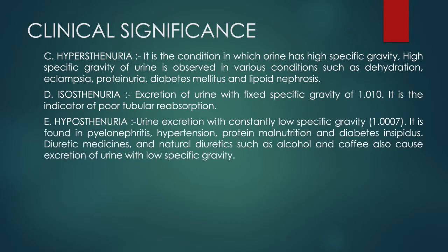Hyposthenuria means a specific gravity lower than the normal range. It can be found in conditions such as pyelonephritis, hypertension, protein malnutrition, and diabetes insipidus. If the patient is taking diuretic medicines or natural diuretics such as alcohol or coffee, low specific gravity can also be seen.